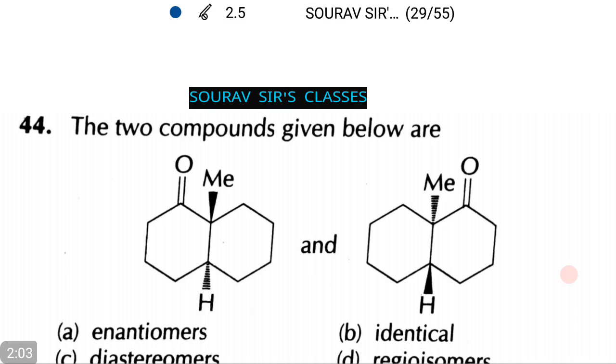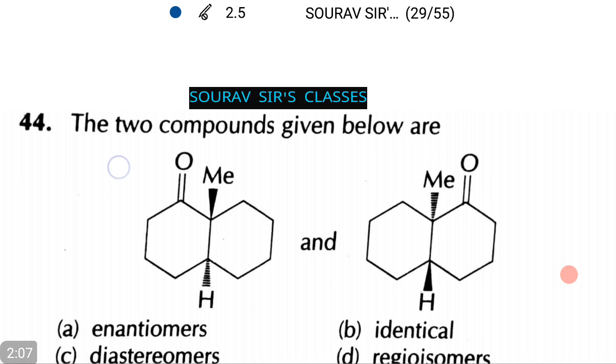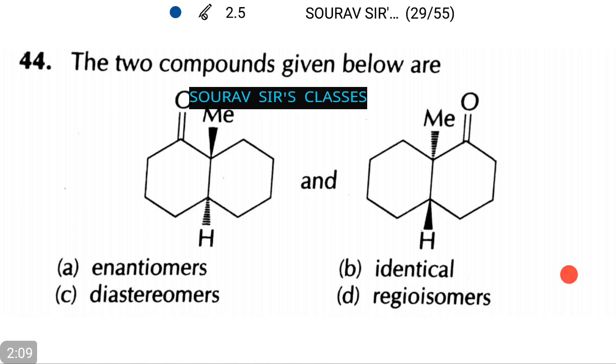In the next question we are given two compounds. We have to find out whether they are enantiomers, identical, diastereomers or regioisomers.